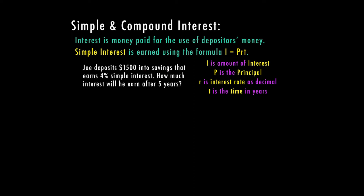Let's see our first example. We have Joe — he's going to deposit $1,500 into savings that earns 4% simple interest. How much interest will he earn after five years? We're going to start with our basic formula: I equals PRT. Your I is what you're solving for. P is the principal, the amount of money that we start with, which is $1,500.